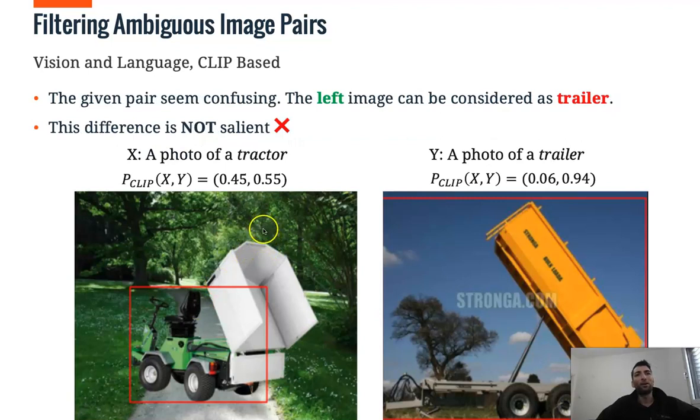So, we take a pair, which is a candidate to be filtered or kept in our data set. And we need to understand whether it has one main salient difference. So, we take the annotation, tractor and trailer, and we take the images.